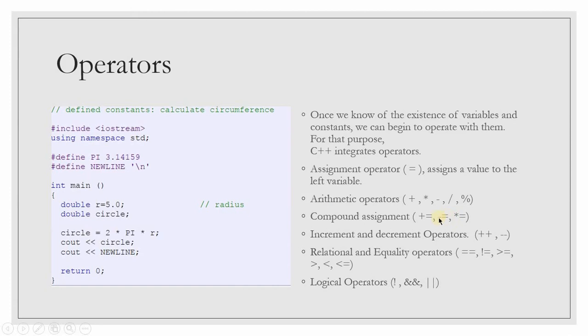The star operator — we call it an asterisk, not a star. It is used for multiplication. When programming, you need to change your mindset from math class. The way you see things is a bit different — most operators have specific names. For example, this is not a percentage sign, it is the modulo operator; and this is not a star, it is an asterisk used for multiplication.